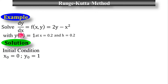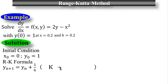The initial condition is x₀ equals 0 and y₀ equals 1. The formula of the Runge-Kutta method is: y_(n+1) equals y_n plus (1/6) times (k₁ plus 2k₂ plus 2k₃ plus k₄). This is the formula of the Runge-Kutta method.